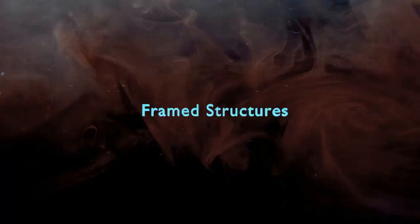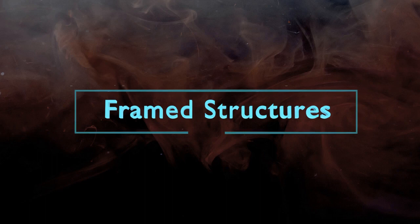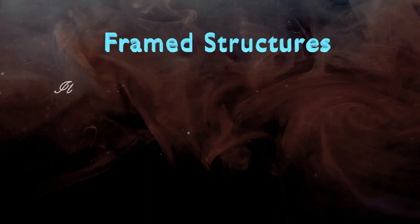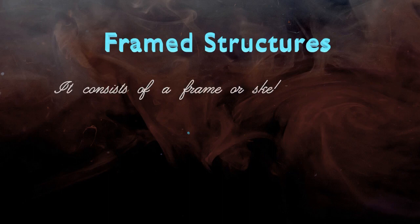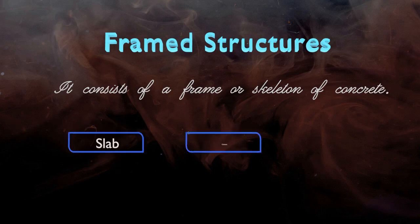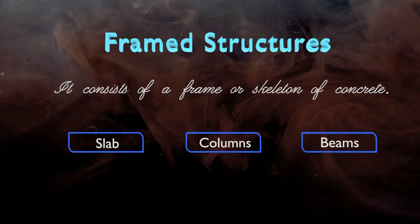For multi-storey buildings, RCC framed structures are widely used. This structure usually consists of a frame or skeleton of concrete, made up of different members like slabs, columns, and beams, which are firmly connected to each other.